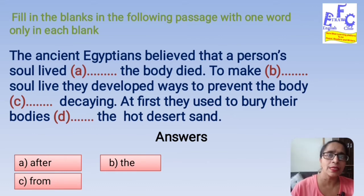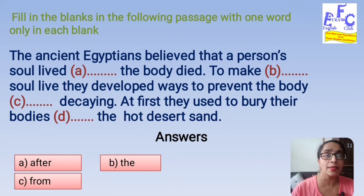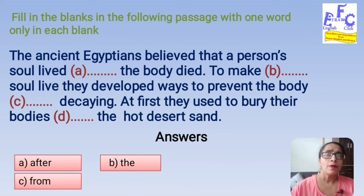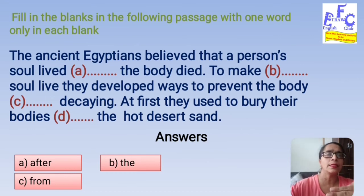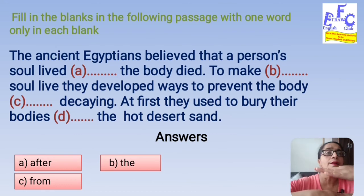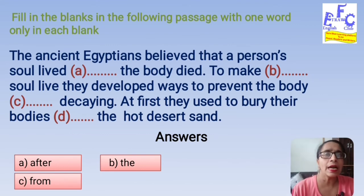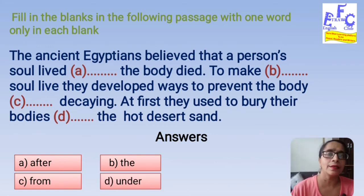At first, they used to bury their bodies — the hot desert sand. Their bodies means the persons who are dead. Where did they bury the bodies? In the hot desert sand. We need to establish a relationship between the burial of the body and the desert sand — the body is covered under the sand. So we will use a preposition of place. At first, they used to bury their bodies under the hot desert sand. So it is confirmed — under the hot desert sand.